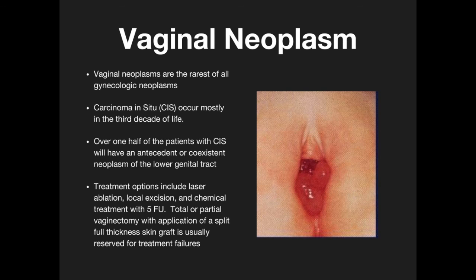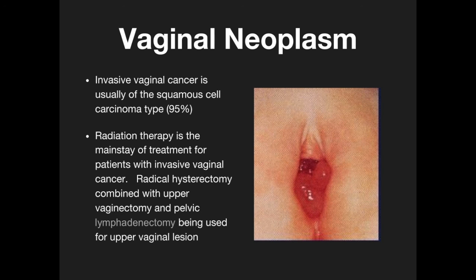Vaginal neoplasm is the rarest of all gynecologic neoplasms. Carcinoma in situ is most common in the third decade of life. Over half the patients with CIS have a co-existing neoplasm of the lower genital and urinary tract. Treatment options include laser ablation, local incision, and chemical treatment with 5-FU. Total or partial vaginectomy with application of a split-thickness skin graft is reserved for retreatment failures. Invasive vaginal cancer is usually squamous cell carcinoma, comprising 95% of cases. Radiation therapy is the mainstay of treatment for patients with invasive disease. Radical hysterectomy combined with upper vaginectomy and pelvic lymphadenectomy can be used for upper vaginal lesions.